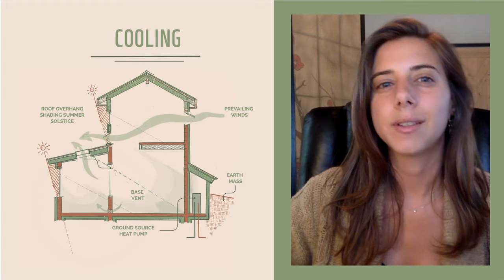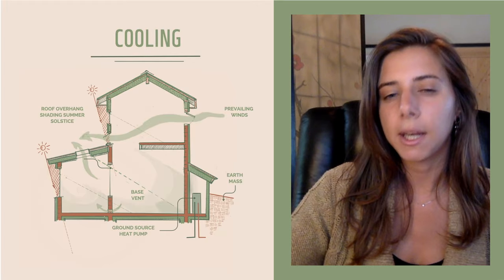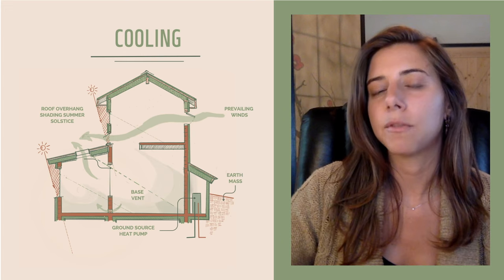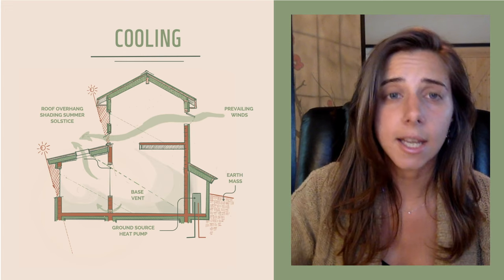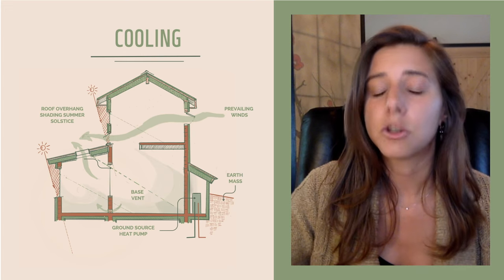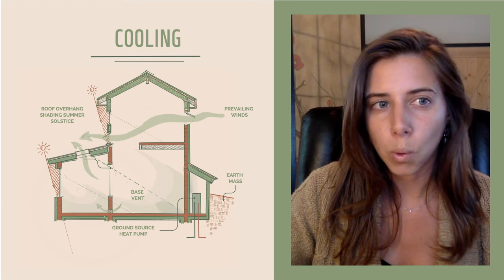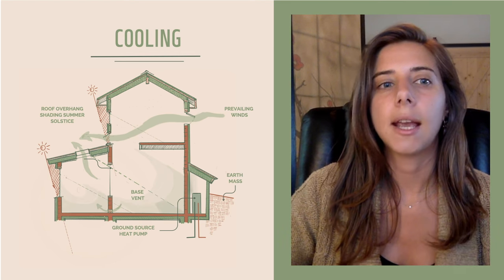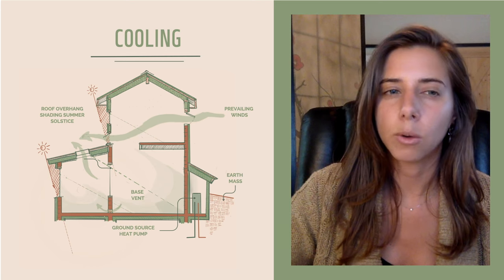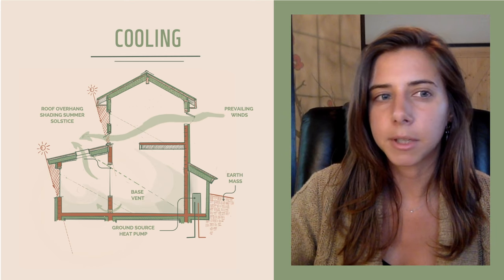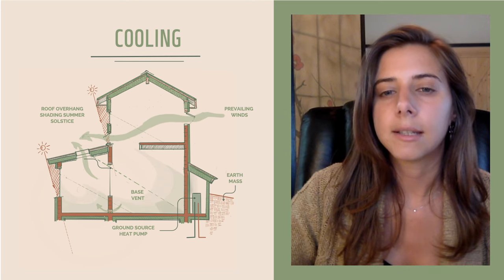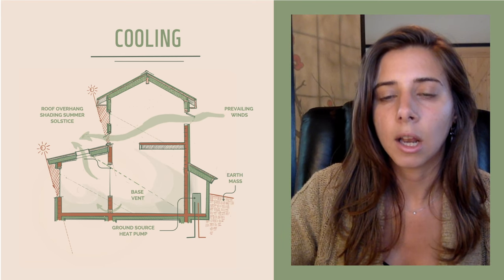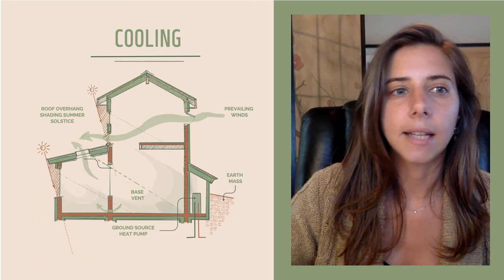Passive cooling systems don't require too many backup systems if it's done right. The main features of passive cooling are going to be shading, natural ventilation, and evaporative cooling. The big thing with shading is you're going to want to have adequate overhangs to protect from that summer sun, and we'll get into this in more detailed calculations in the coming slides.